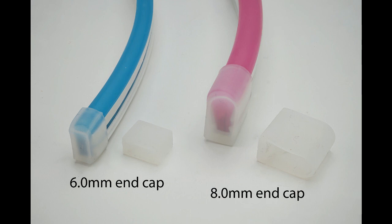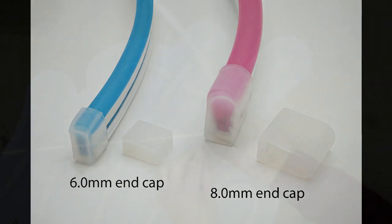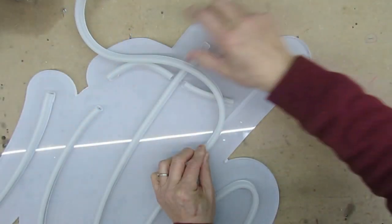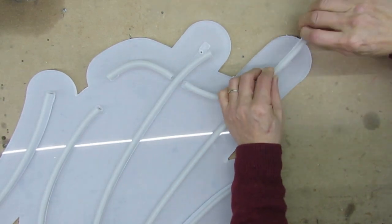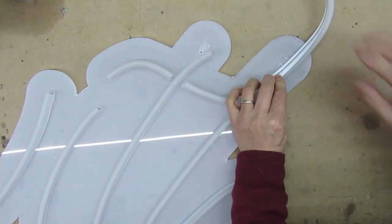The neon flex we are using in this video is our 8mm winged neon flex with the 8mm silicone waterproof end caps. We are using a 5mm thick clear acrylic back panel which has been grooved using our special CNC cutter.